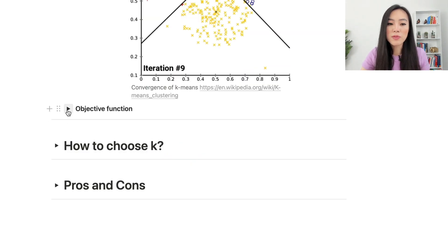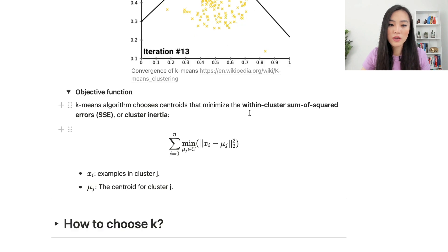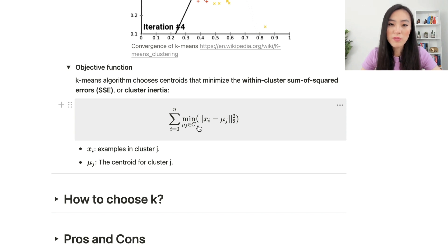Now let's look at the objective function of K-means algorithm. K-means algorithm chooses centroids that minimize the within-cluster sum of squared errors SSE, or cluster inertia. Here's the objective function of K-means algorithm: xi here means examples in cluster j, mu j is the centroid for cluster j. So our goal here is to minimize the sum of the square distance between xi and mu j, and the square distance is the within-cluster sum of squared errors SSE.